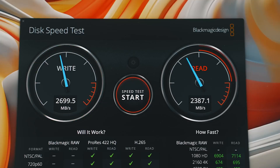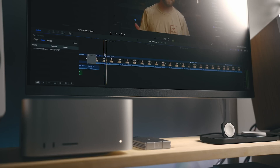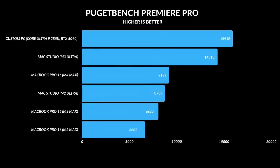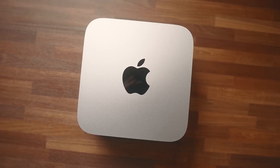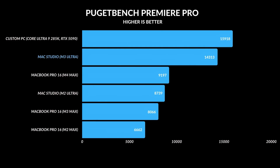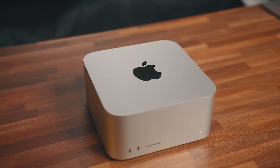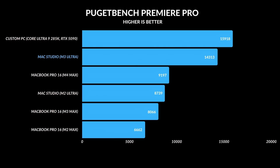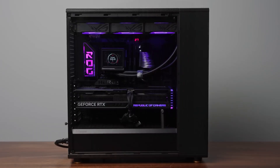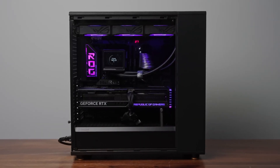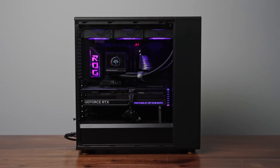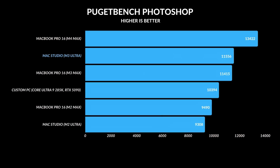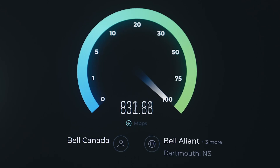The M3 Ultra isn't just faster than the M4 Max — it's in the same league as an RTX 4090 laptop GPU. Blender benchmarks prove it, up to 76% faster than M2 Ultra. But here's the real kicker: while an RTX 590 system pulls 575 watts, the Mac Studio barely reaches 300W at full tilt. That's insane efficiency.